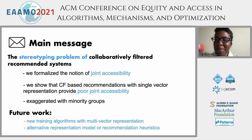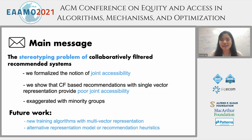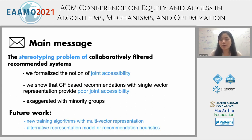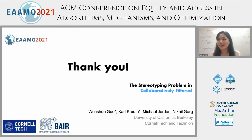The main message here is: we considered the stereotyping problem of CF-based recommender systems, introduced the notion of joint accessibility, and demonstrated that current CF-based recommendations indeed appear to have poor joint accessibility over item sets. In terms of future work, we are interested in new training algorithms with multi-vector representation and other alternative representation models or recommendation heuristics. With that, I will conclude my talk. Thanks for listening.